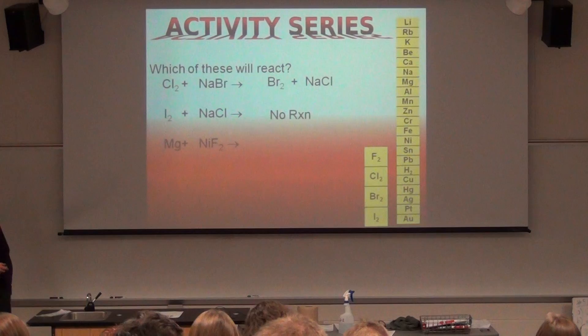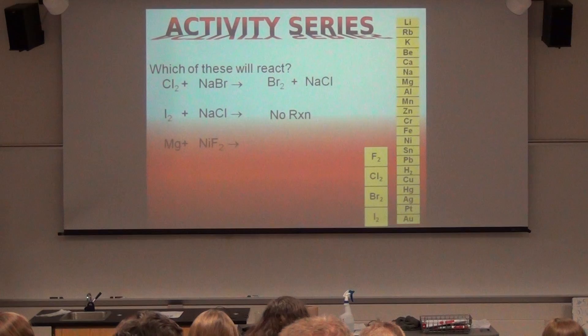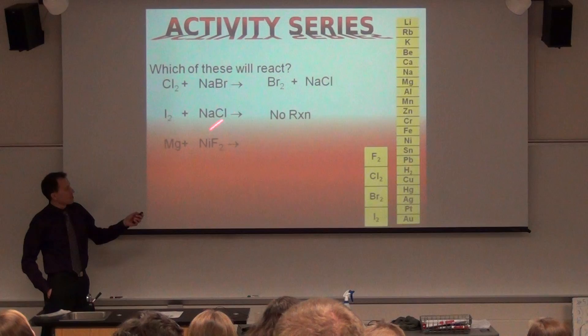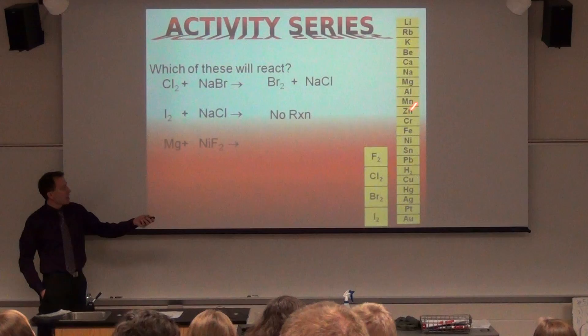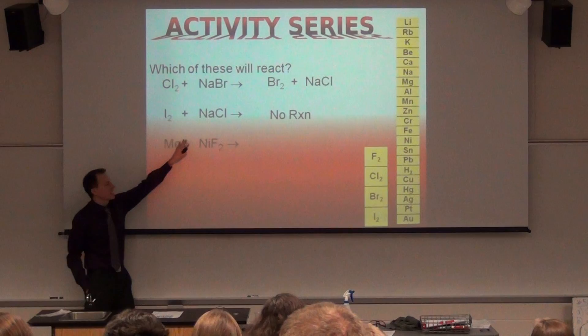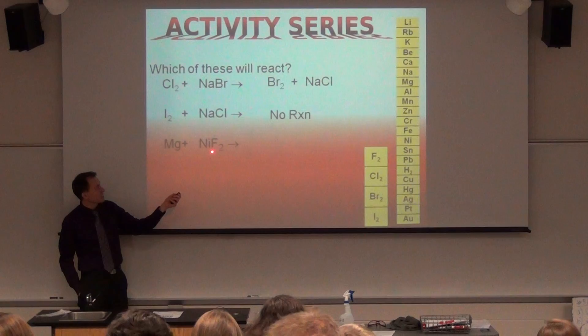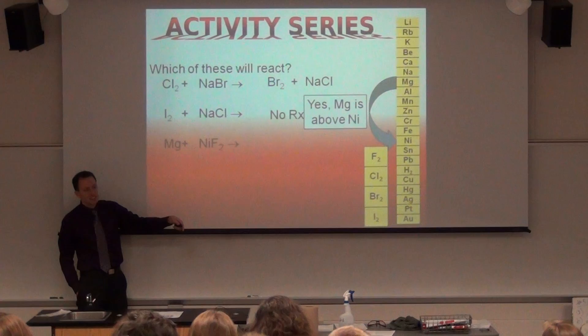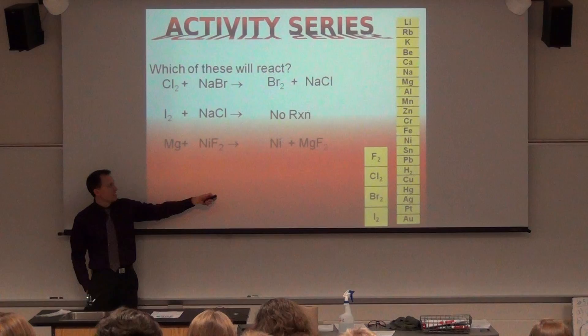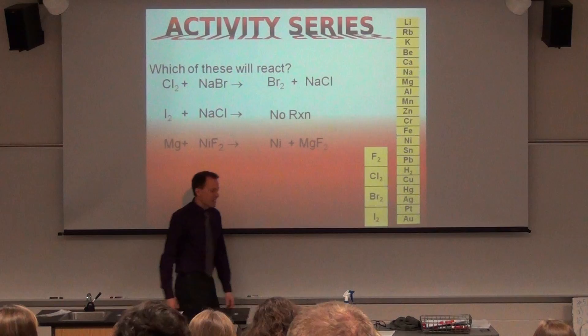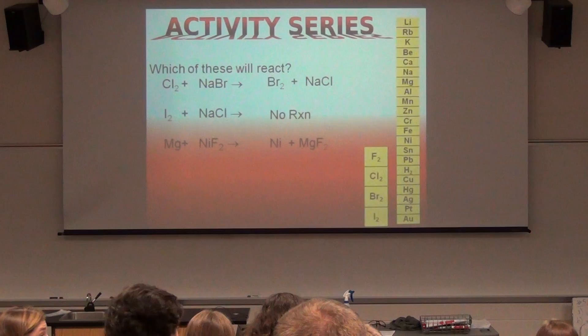Will the last reaction happen? I'm trying to trick you. Mg is right here — you have to find something on the same list as Mg. Mg and F are not on the same list. The one by itself is the one trying to get in — it's trying to kick out Ni, which it can because Ni is lower than Mg. So Ni is kicked out and Mg goes in. The reason there's still a 2 there is Mg has a 2+ charge and F has −1, so it still works out.